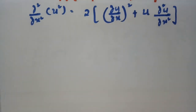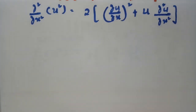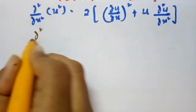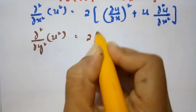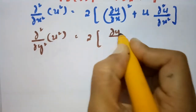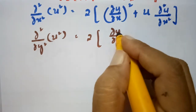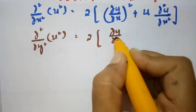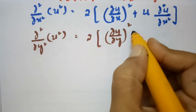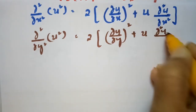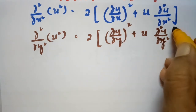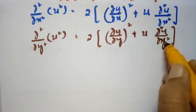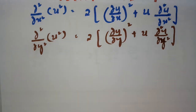Similarly, making the double derivative with respect to y: ∂²(u²)/∂y² = 2·(∂u/∂y)² + 2u·(∂²u/∂y²).